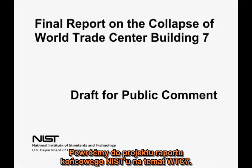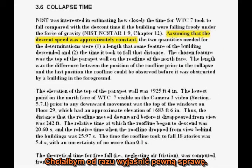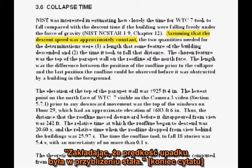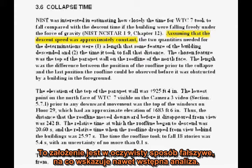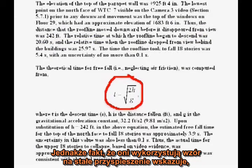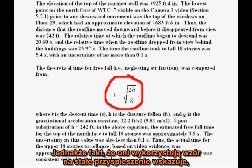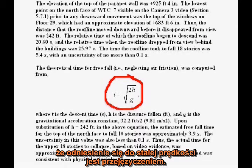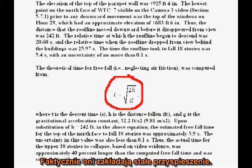Let's return to the NIST final report on WTC 7. On page 40 there is a phrase, quote, assuming that the descent speed was approximately constant, unquote. The assumption is clearly false from even casual observation. However, the fact that they proceed to use a formula for constant acceleration clearly indicates the constant speed reference was a misstatement — they are actually assuming constant acceleration.